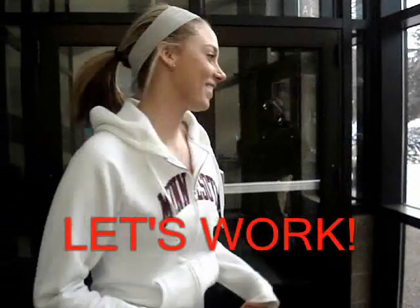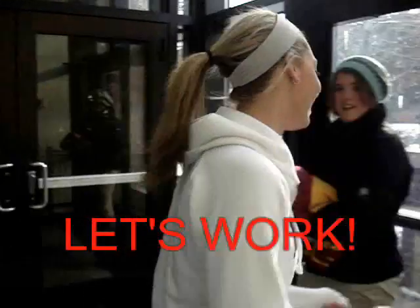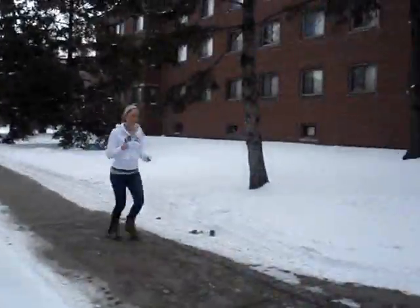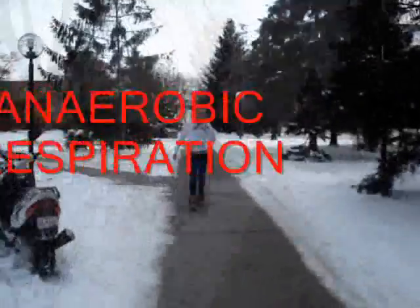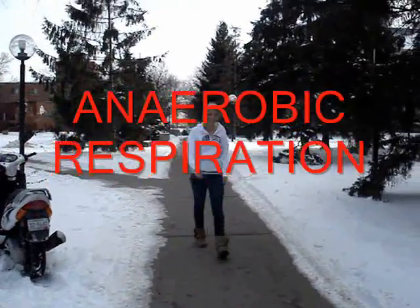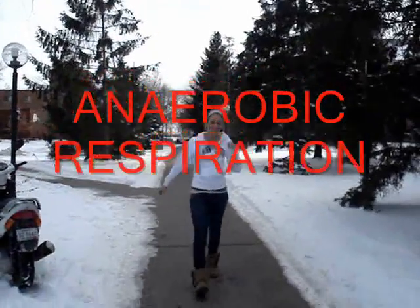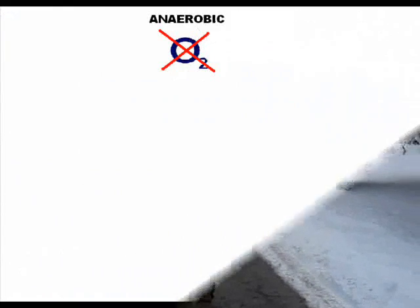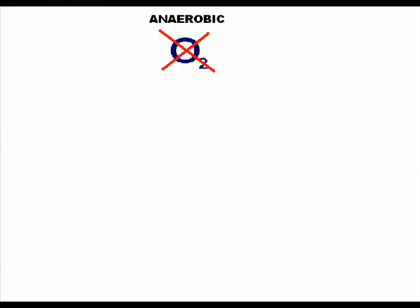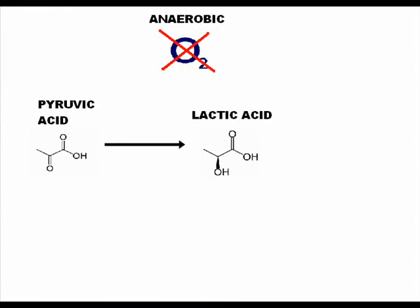After running intensely, Samantha's body needs more ATP, but aerobic respiration cannot produce it fast enough. So, she goes through anaerobic respiration to produce the additional ATP. Anaerobic respiration occurs without oxygen. Pyruvic acid is converted to lactic acid and only two ATP are produced.